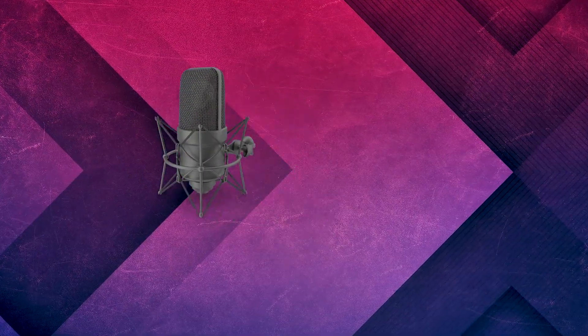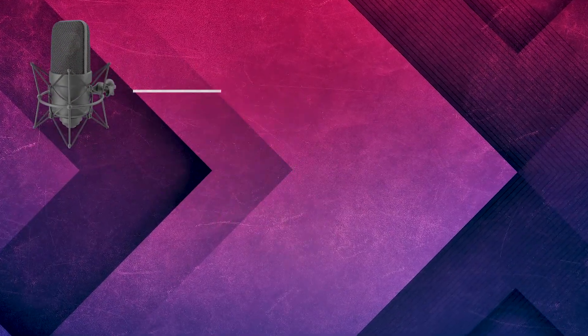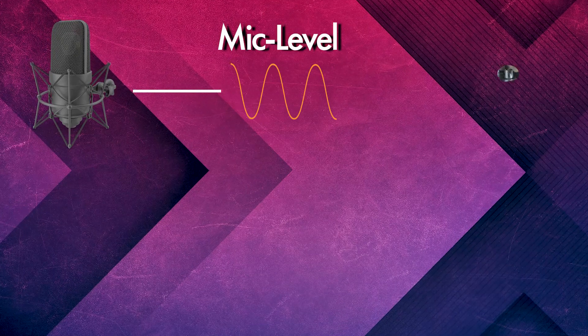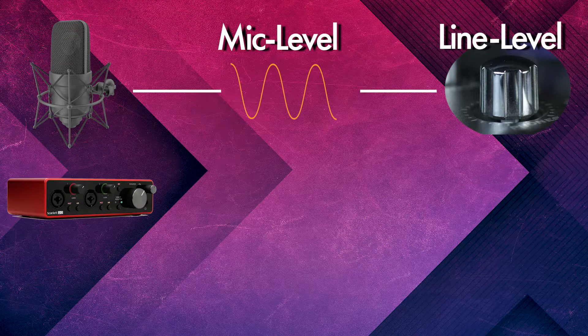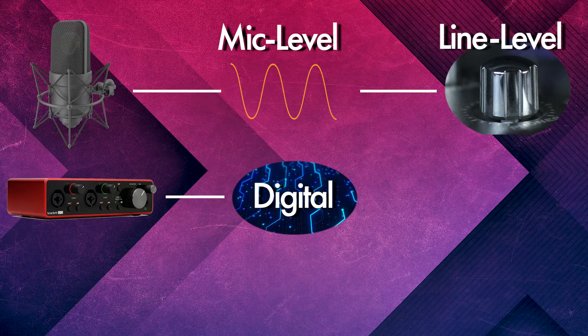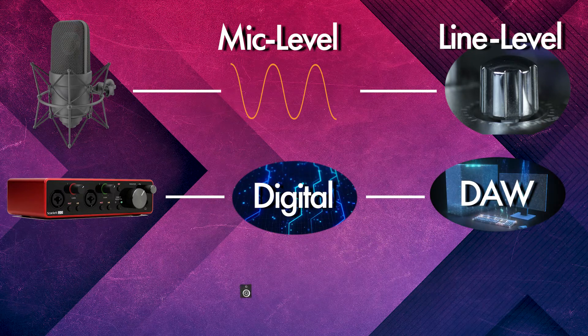Once the audio has been processed, it can then be played back through speakers or headphones. To review: sound enters the microphone, which converts it into a weak mic level signal. The preamp boosts this signal to line level, where it's strong enough to undergo processing. The audio interface converts that signal into a digital signal, which it then sends to the DAW, where it's processed and played back through speakers or headphones.